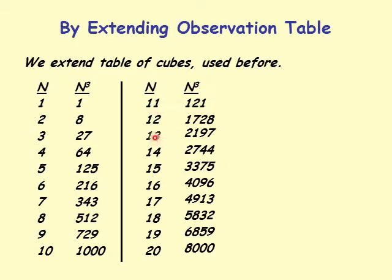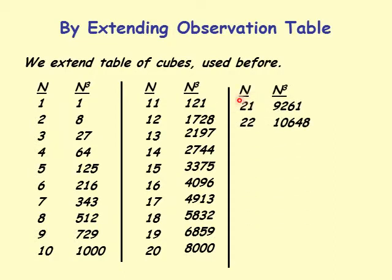Next we do cubes of the next 10 numbers. 11 cubed is 1331. 13 cubed is 2197. Cube of 16 is 4096. That of 19 is 6859 and so forth. And then I have two more cubes, which is 21 cubed is 9261 and 22 cubed is 10648.